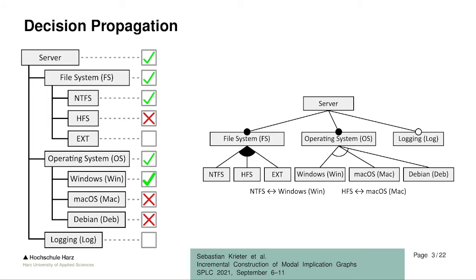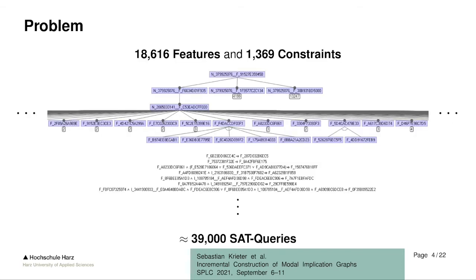This leads to a valid configuration in the end that will have no conflicts at all. So what's the problem with decision propagation? The problem is that you have large-scale feature models — for example, from the automotive domain with over 18,000 features and over 1,000 constraints. If you would do it naively, you would need for just one decision propagation over 39,000 sub-queries. And sub-queries are NP-complete and don't really scale well in this domain.